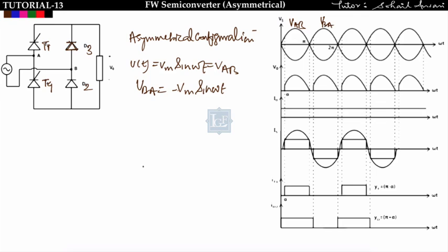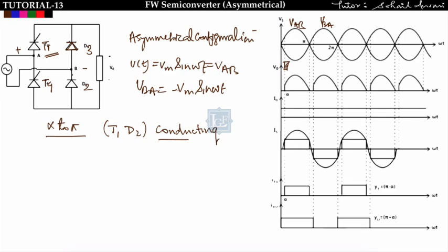In all semi-controlled configurations, the output voltage waveform and source current waveform are the same; there is only a difference in the conduction angle of the thyristor and the diode. At omega t equal to alpha, I am triggering T1. From alpha to pi, T1 and D2 will start conducting. Drawing the equivalent circuit, the cathode terminal of D2 is connected to minus, and T1 is triggered, so D2 and T1 both start conducting at omega t equal to alpha.